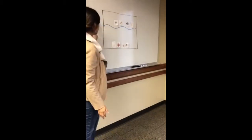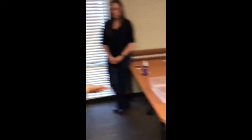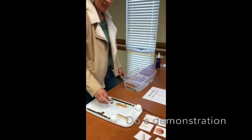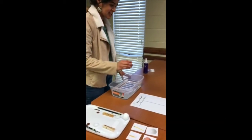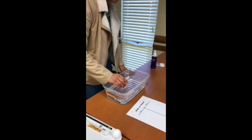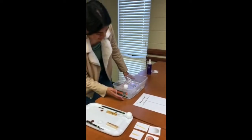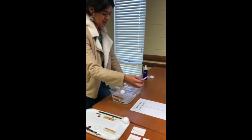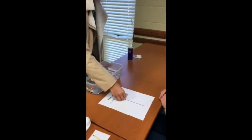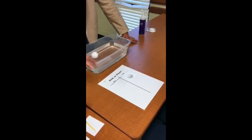Now that we've discussed about things that could sink and float, we're going to start our experiment. You're going to grab an object from the tray and gently place it on the water. Once you see whether it sinks or floats, you're going to get the picture and put it on your T-chart to represent that the item floated or sank.